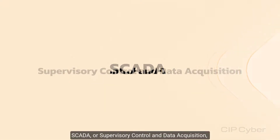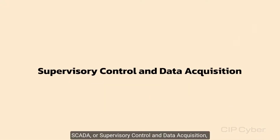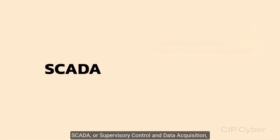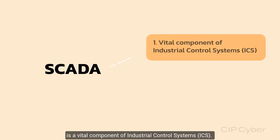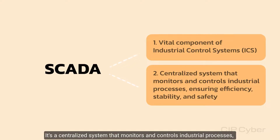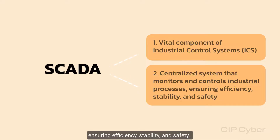SCADA, or Supervisory Control and Data Acquisition, is a vital component of industrial control systems. It's a centralized system that monitors and controls industrial processes, ensuring efficiency, stability, and safety.